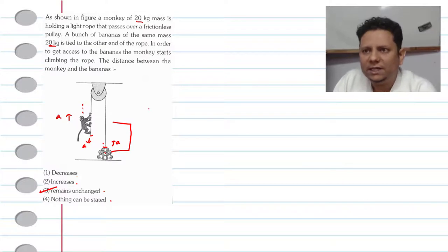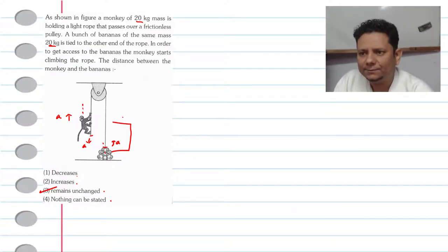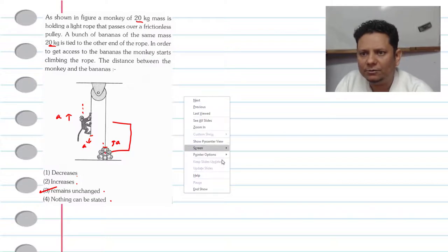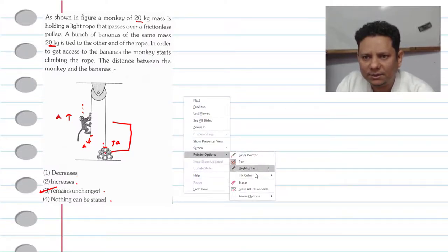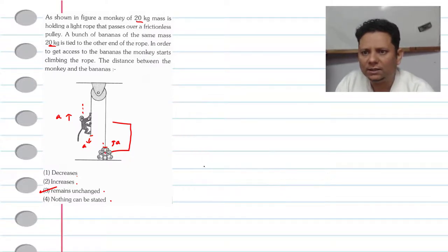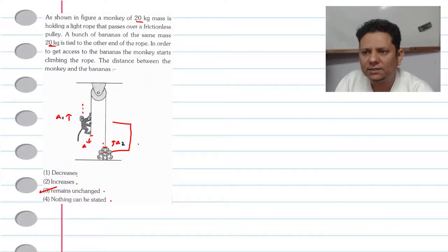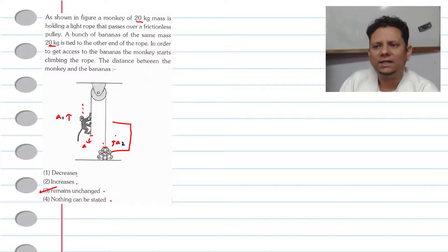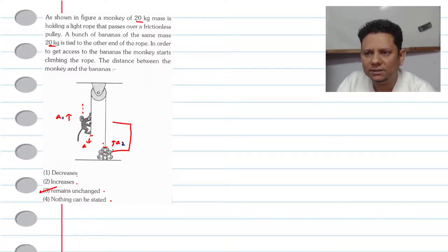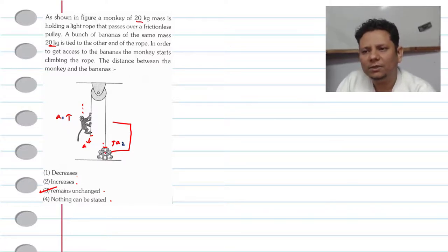Now let us see the mathematical proof. Let us take some assumptions and then solve it properly. Let us say the monkey's acceleration is A1 and the banana's acceleration is A2. Let us say the monkey is going up with acceleration A1 and the banana with A2. We will show that A1 and A2 will be equal.